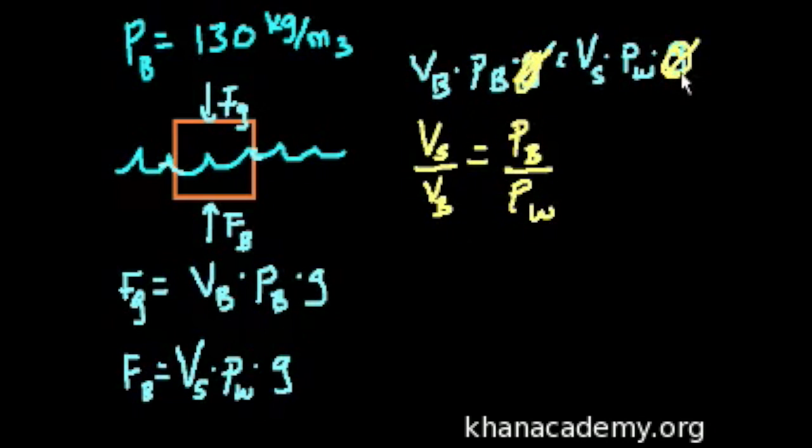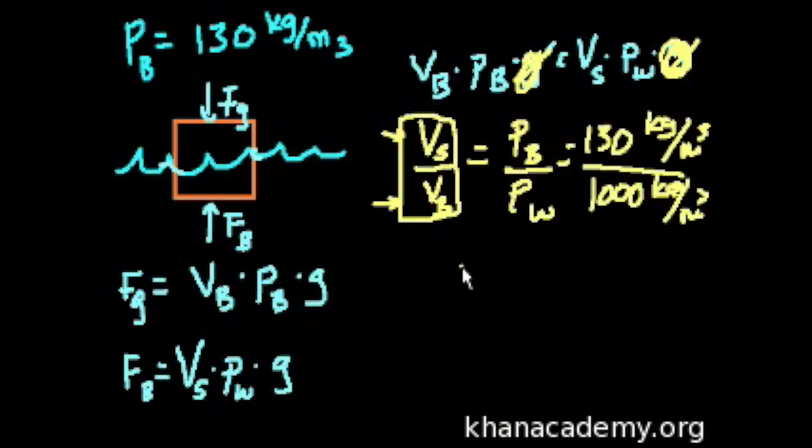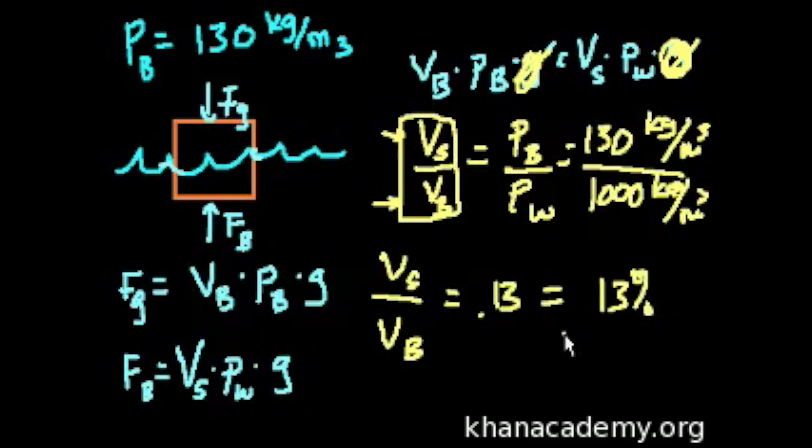And now we're ready to solve our problem. What percentage of the object is submerged? This is the volume submerged over the total volume, this is the percent submerged. That equals the density of balsa wood, which is 130 kilograms per meter cubed, divided by the density of water, which is 1,000 kilograms per meter cubed. So 130 divided by 1,000 is 0.13. So exactly 13% of this balsa wood block will be submerged into the water.